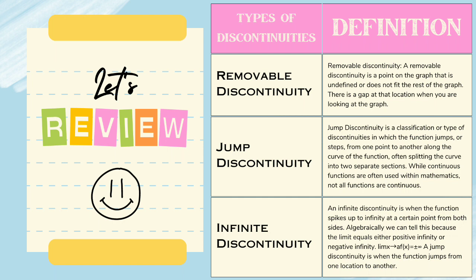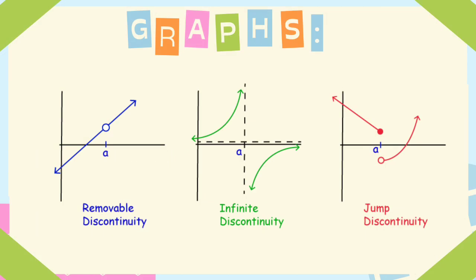Often splitting the curve into two separate sections. While continuous functions are often used within mathematics, not all functions are continuous. An infinite discontinuity is when the function spikes up to infinity at a certain point from both sides. Algebraically, we can tell this because the limit equals either positive infinity or negative infinity. The limit of f(x) equals positive or negative infinity as x approaches a. And here are the discontinuities illustrated as the graph.